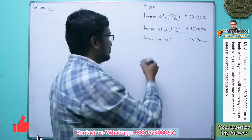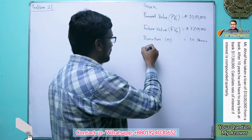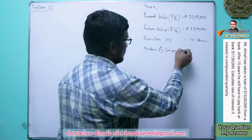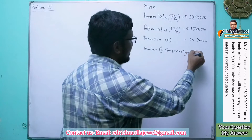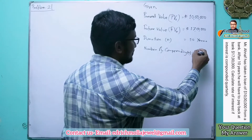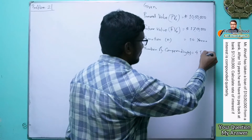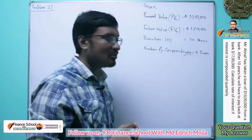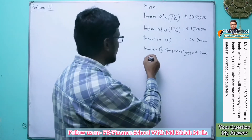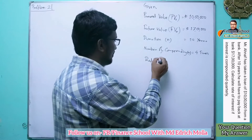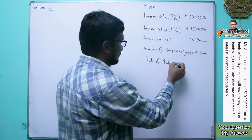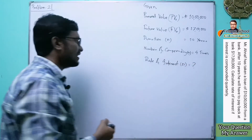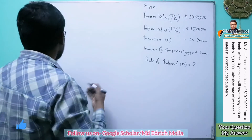We are also given the number of compounding, symbolically written as m, and it is four times, as we have been told to consider quarterly compounding. The requirement is to find out the rate of interest, which will be symbolically written as small r.